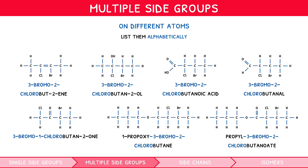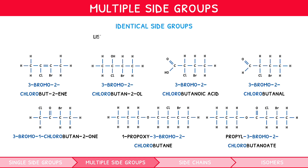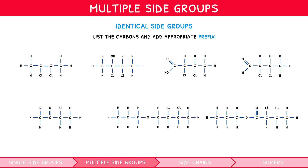But what about when the side group is identical? We simply list the carbons on which they are found and add the same prefix to the side group name as with multiple functional groups — i.e., di, tri, and so on — although you will likely only see two groups. Let's review the same examples, converting the bromine to a chlorine group.